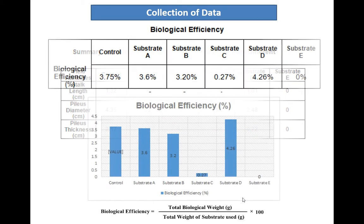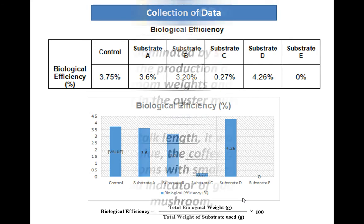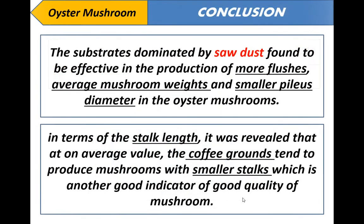In terms of biological efficiency, substrate B got the highest value. In conclusion, the substrates dominated by sawdust were found to be effective in the production of more flushes, average mushroom weights, and smaller pileus diameter in the oyster mushrooms.